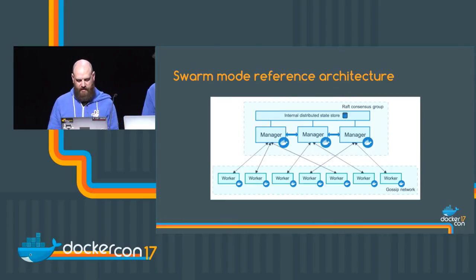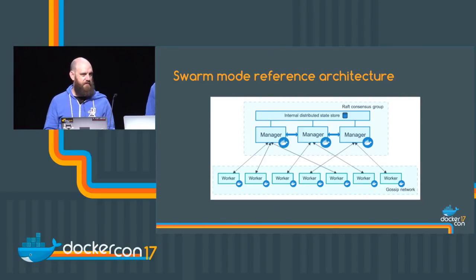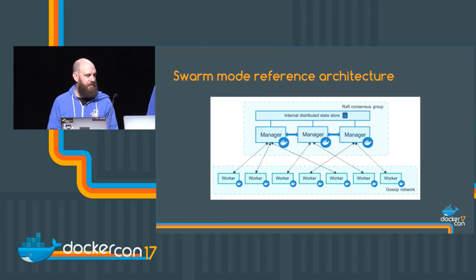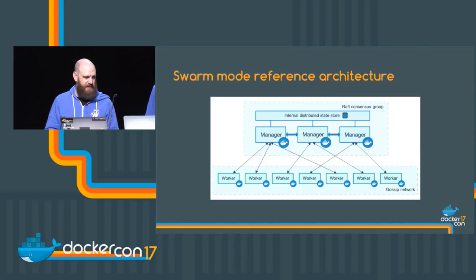Looking at the swarm reference architecture: we've got multiple manager nodes involved in the Raft consensus, and worker nodes which just run application workloads. A best practice is not to have too many managers - the smaller the number, the faster the consensus. For a smaller cluster you should have three; a bigger cluster, five. You can go to seven, but there aren't many use cases for seven manager nodes. You can have tons of worker nodes - there's been a project with over 2,000 nodes in a swarm cluster. Keep your manager nodes small, and hopefully you'll never lose four out of five managers if they're set up across multiple AZs or geolocations.